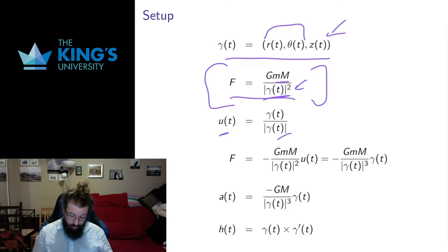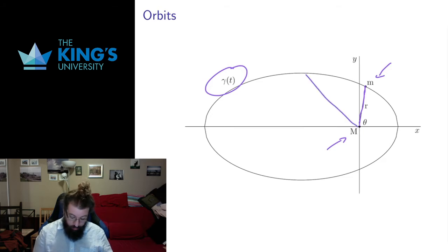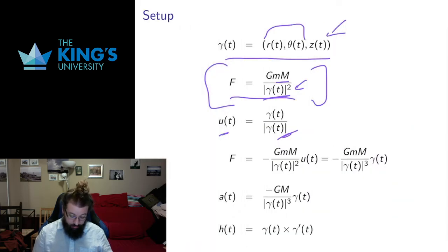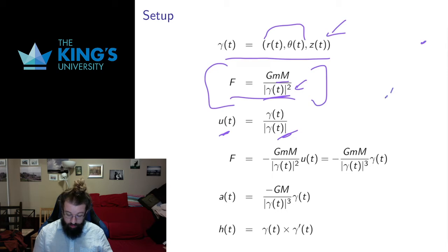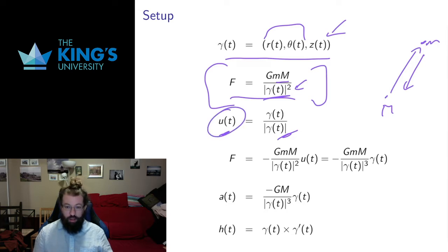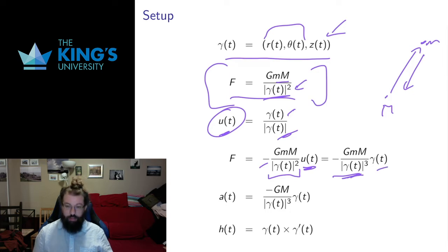I can also ask what direction gravity goes. The unit direction that gamma is pointing in is gamma divided by its length. The force of gravity is exactly the opposite direction — if the large mass M is at the origin and little m is out here, gravity points in exactly the opposite direction. So the direction of gravity is negative gamma divided by the length of gamma cubed. Newton's law says force equals mass times acceleration, so dividing out the little mass gives the acceleration as negative G times M divided by the length of gamma cubed, multiplied by gamma. This is the equation of motion.